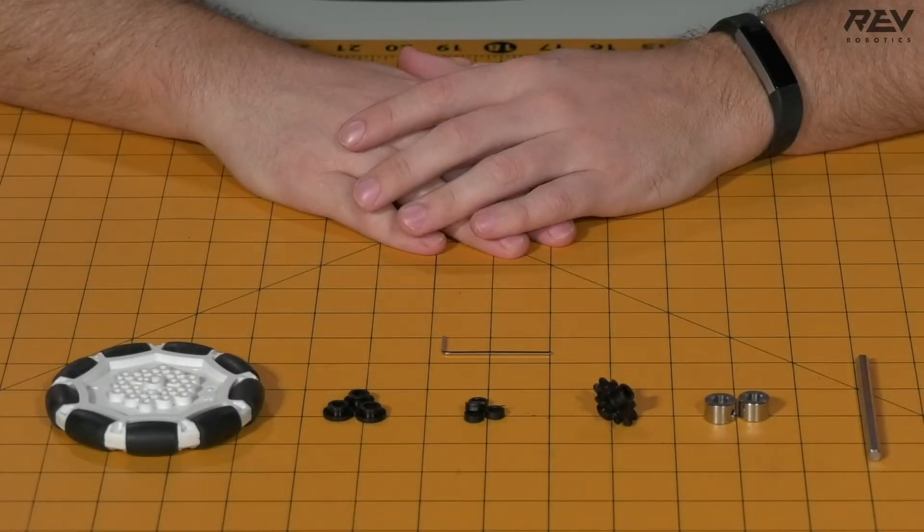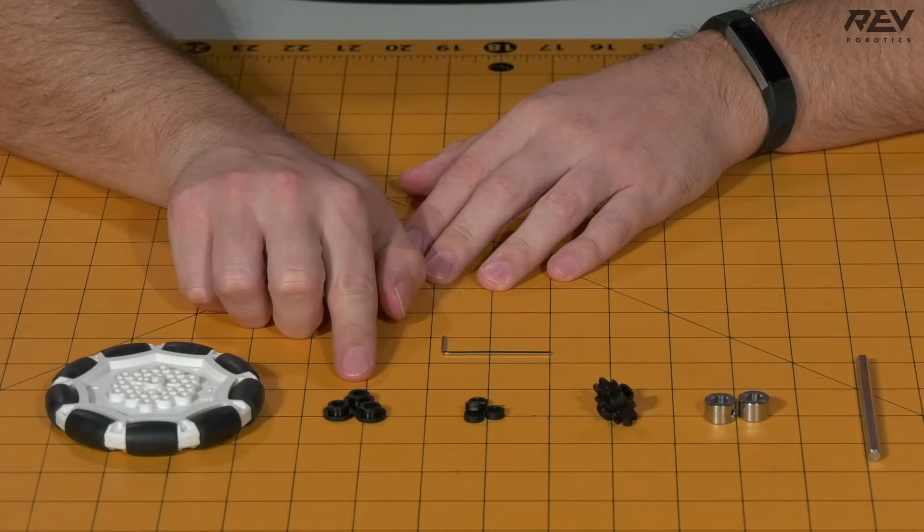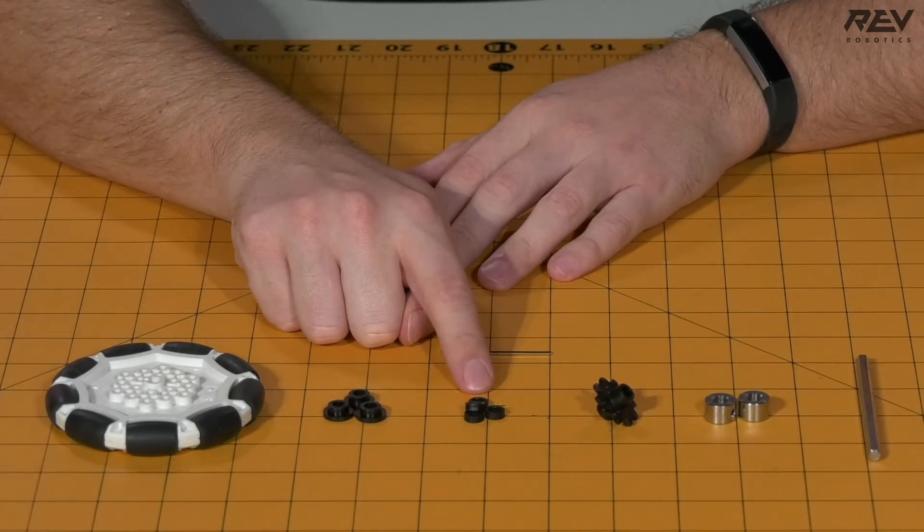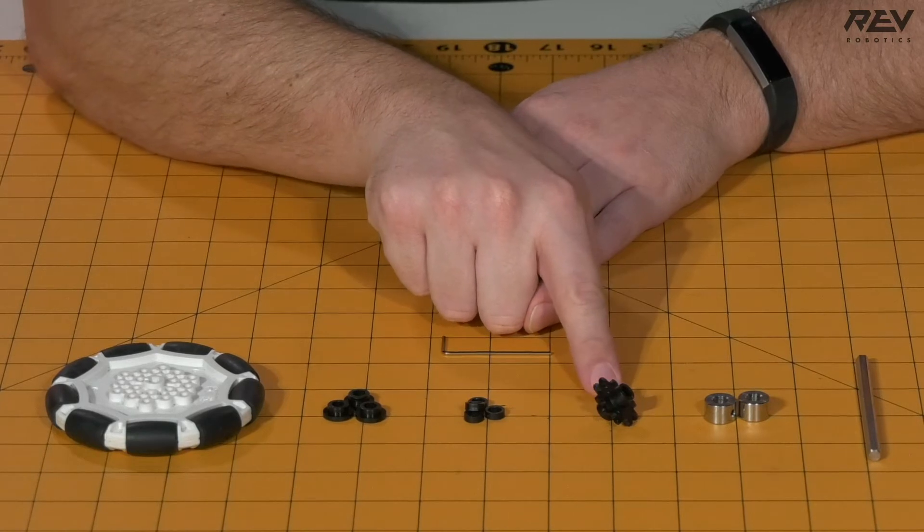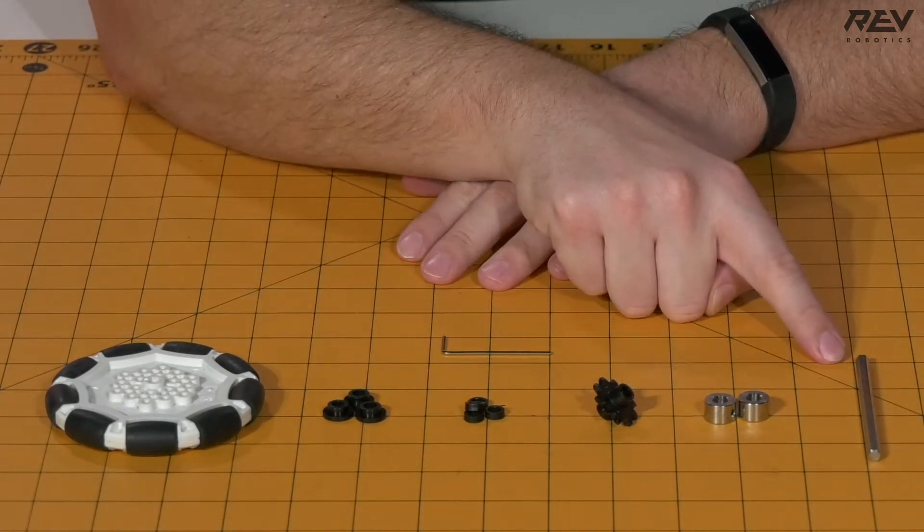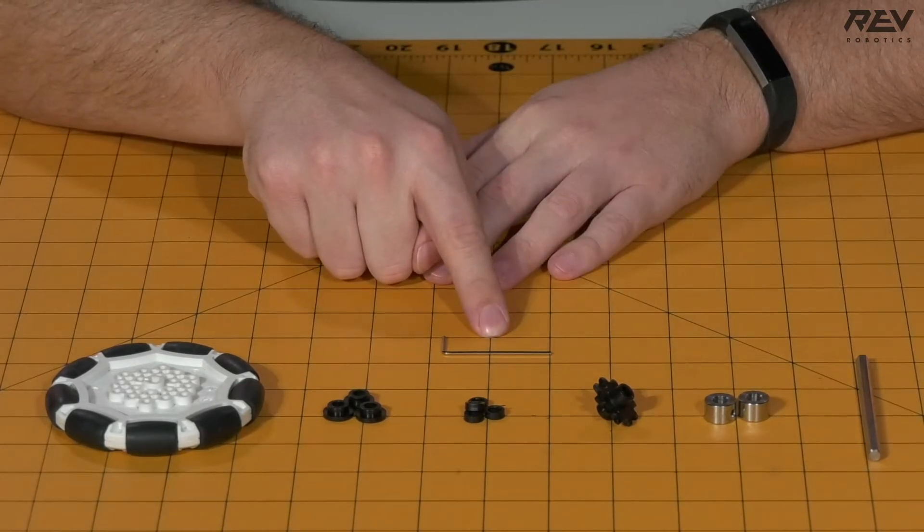We are building the drive shaft assembly. For this step you're going to need a 90 millimeter Omni wheel, three short through-bore bearings, four three millimeter spacers, one 10 tooth number 25 sprocket, two shaft collars, a 90 millimeter length of 5 millimeter hex shaft, and a 1.5 millimeter Allen wrench.